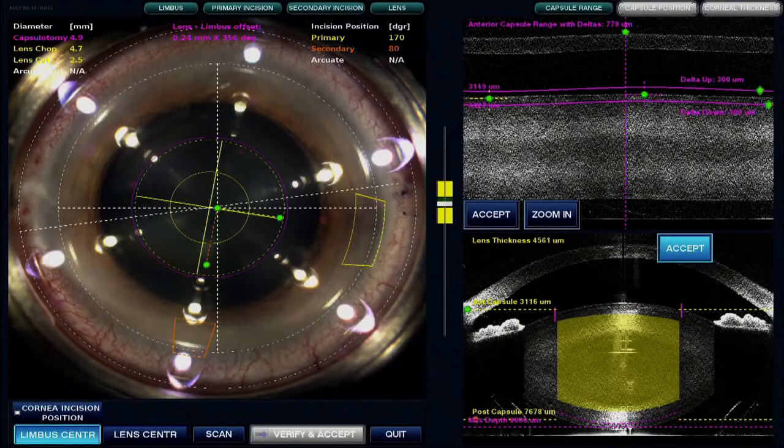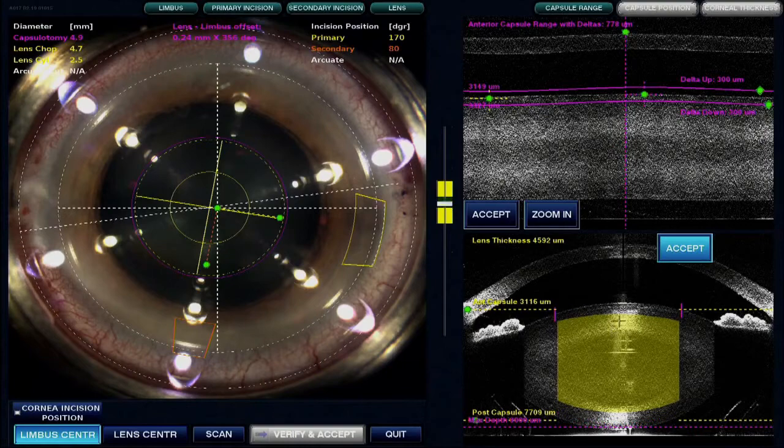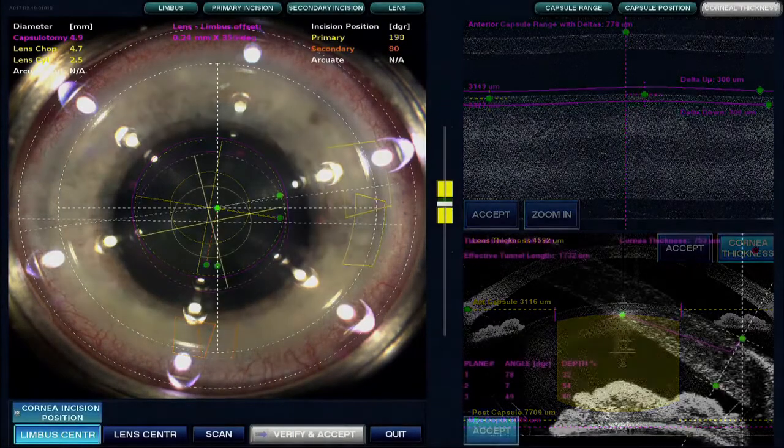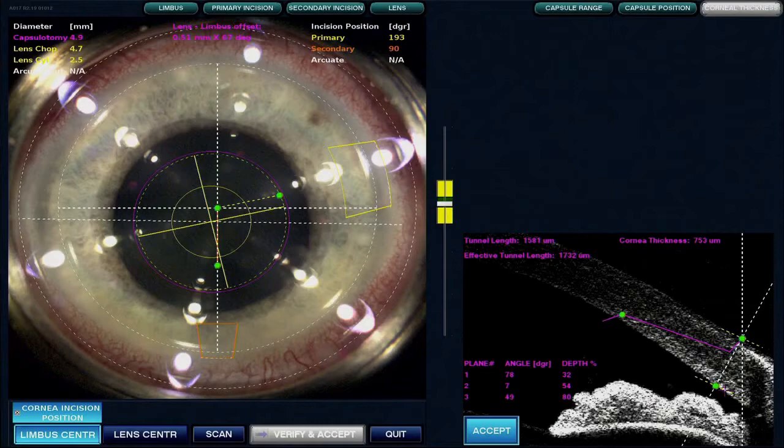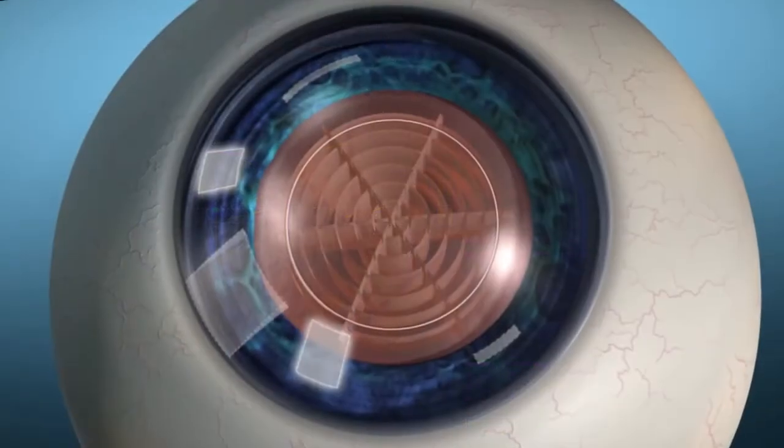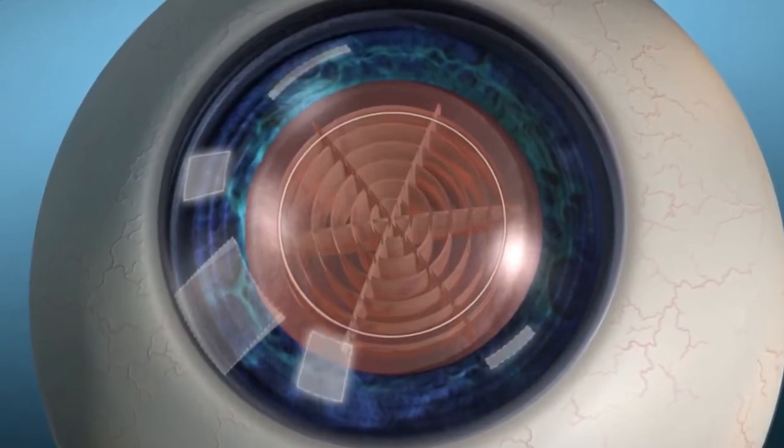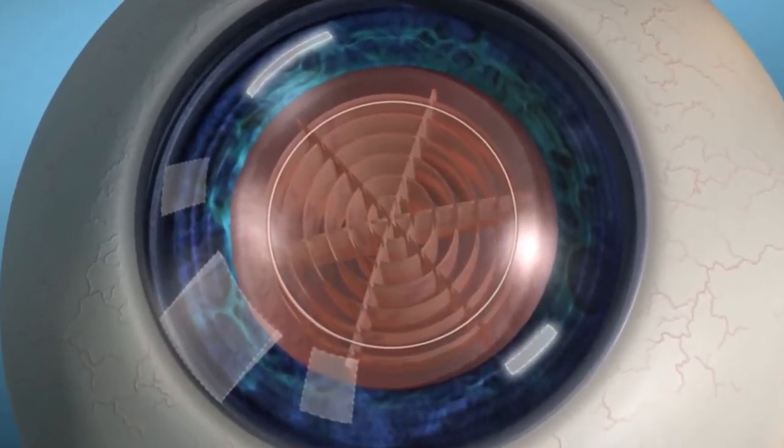The large-range OCT rapidly scans the entire anterior segment. This allows each step of the procedure to be easily planned, customized, and executed. The software now includes bimanual incisions and independent arcuate incisions for further surgical customization.